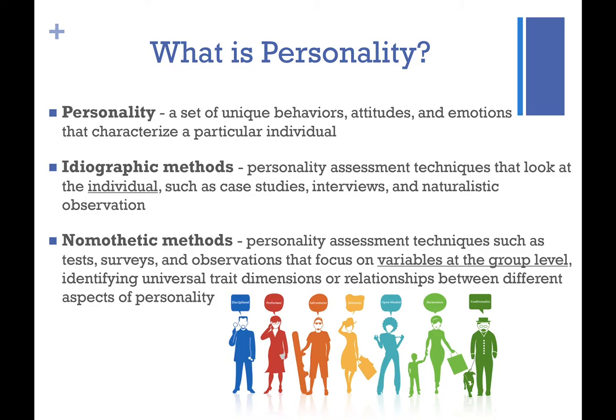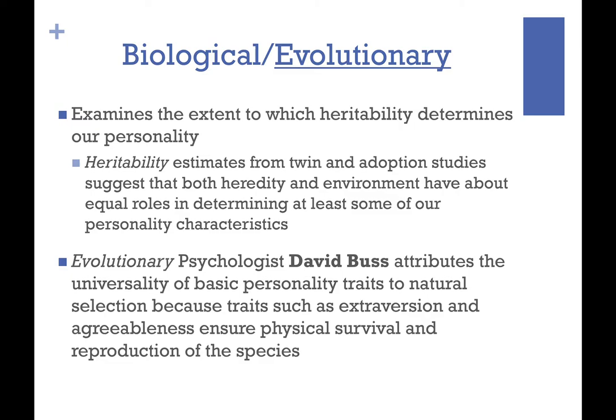In Myers-Briggs, you fall into four different characteristic traits based on how you score. The Big Five personality trait index is Hans Eysenck's CANOE or OCEAN model, and as the name implies, it has five personality dimensions.